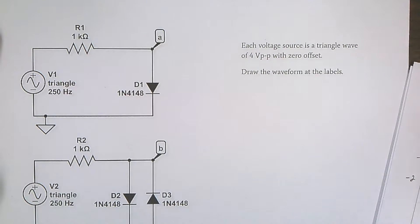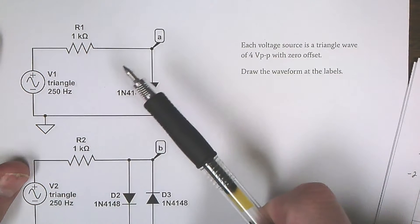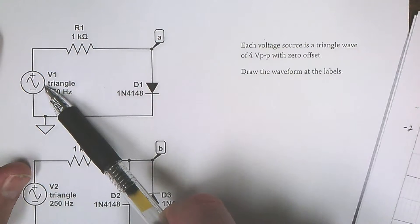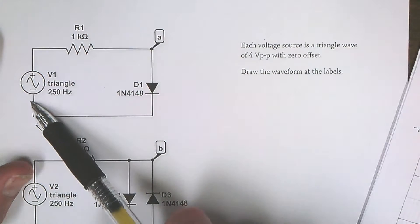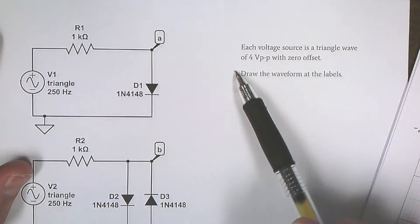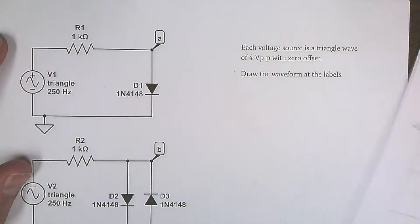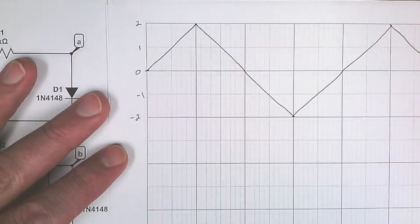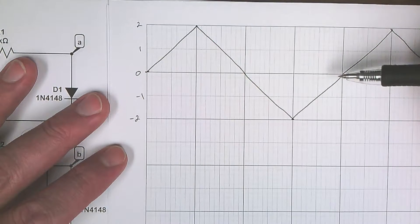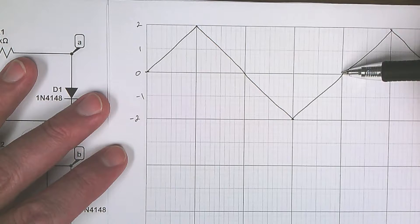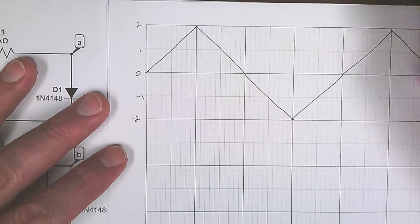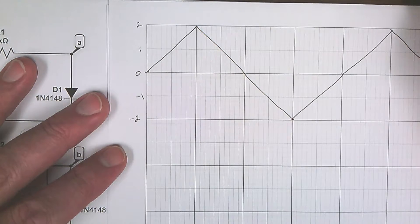Let's look at some diode circuits with waveforms injected into them with voltage sources. This is 4 volts peak-to-peak with a zero offset. This means it goes up to 2, goes down to minus 2, and has a certain period. So this is 1 over 250 Hz, whatever that number is.